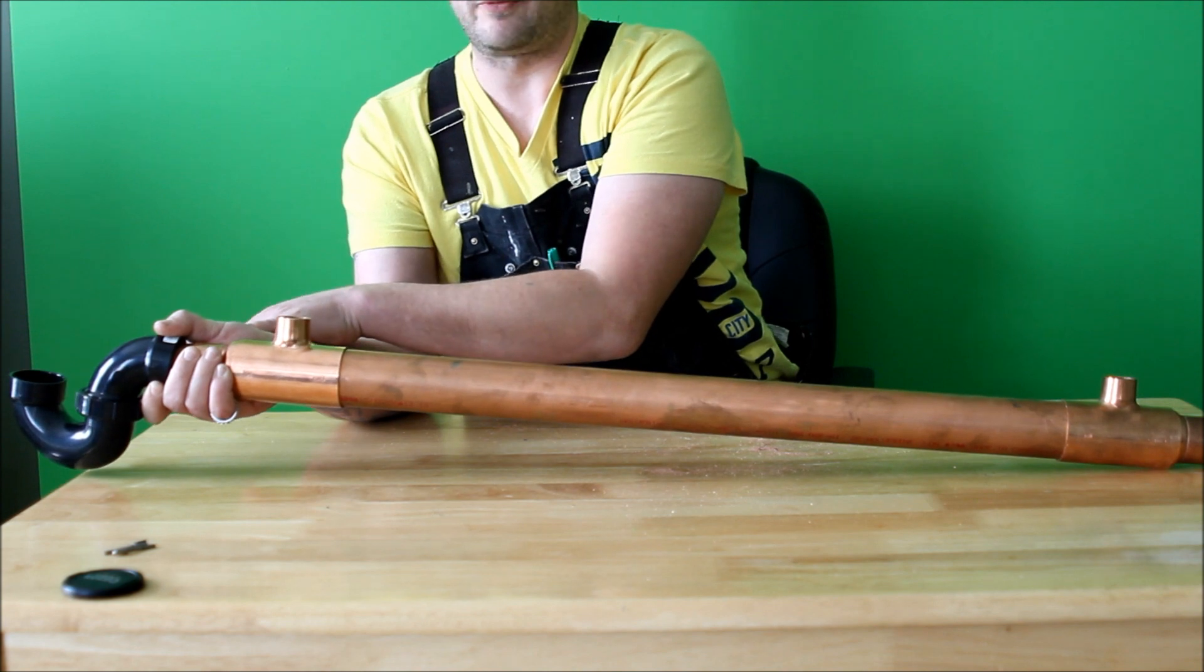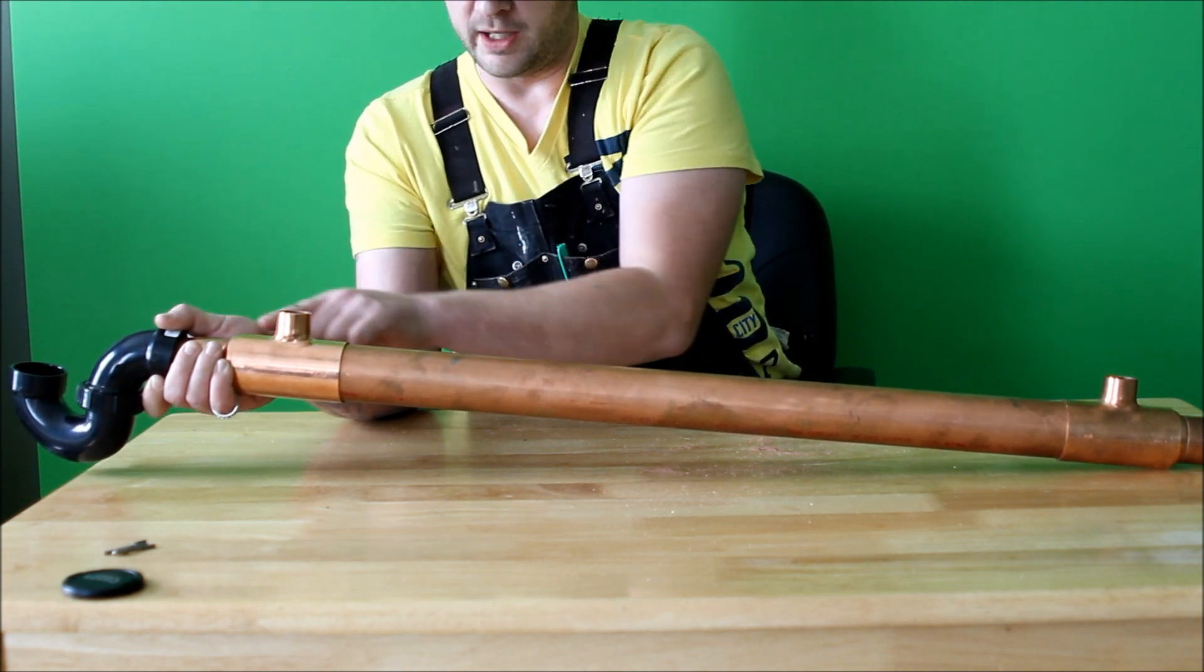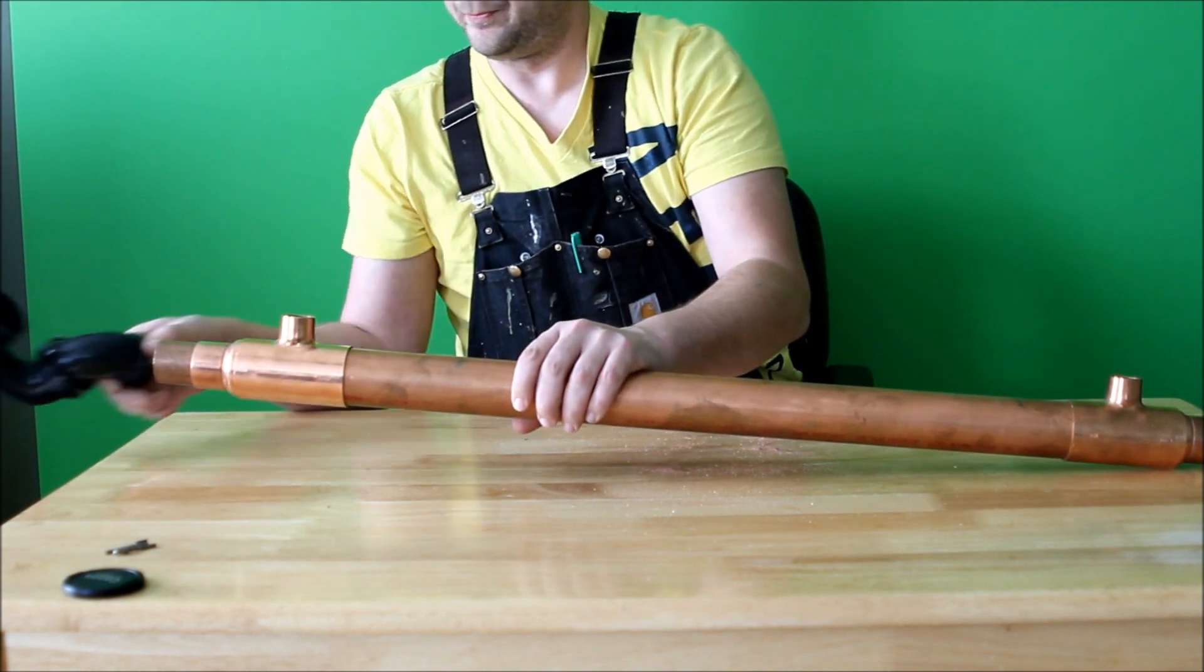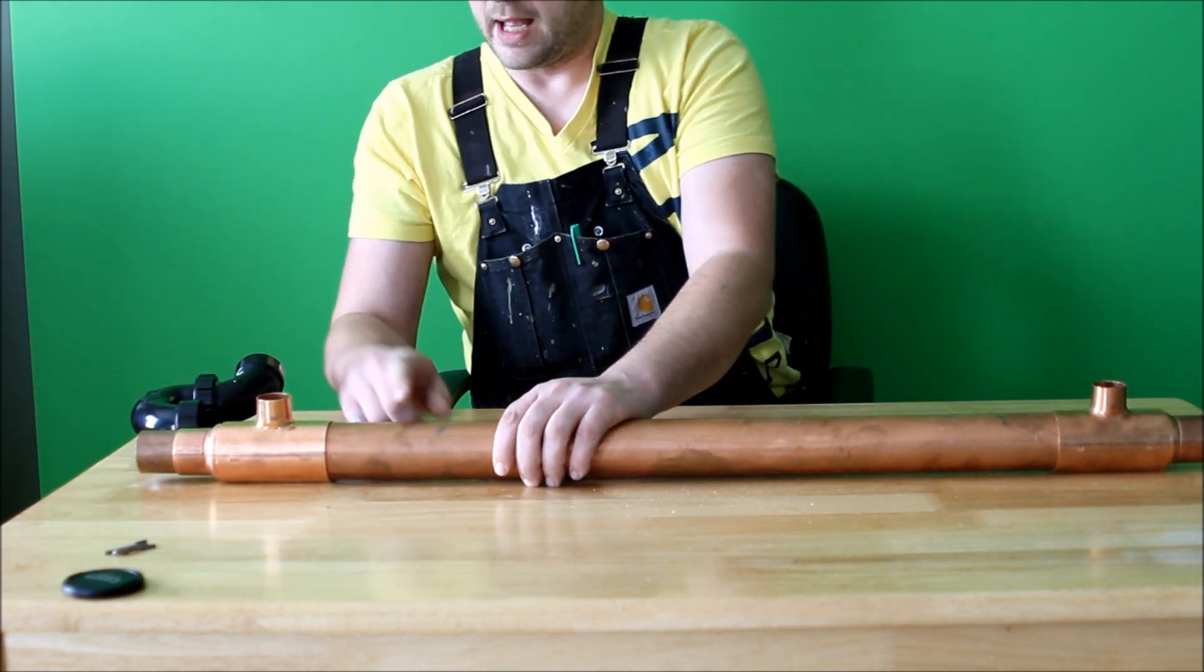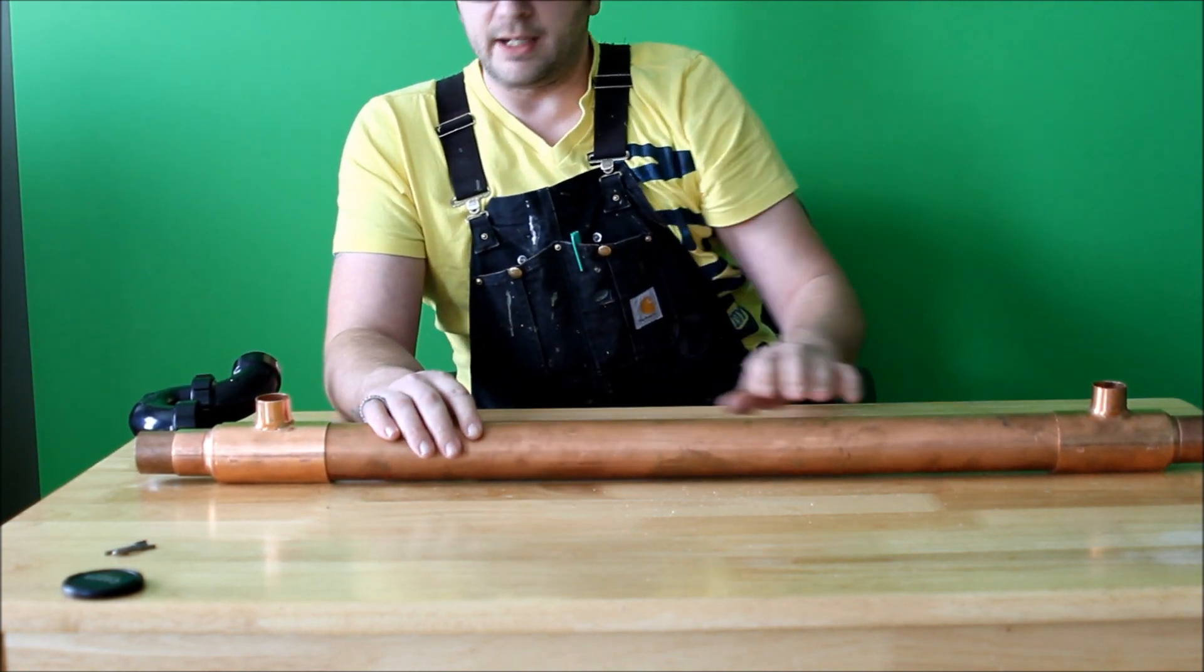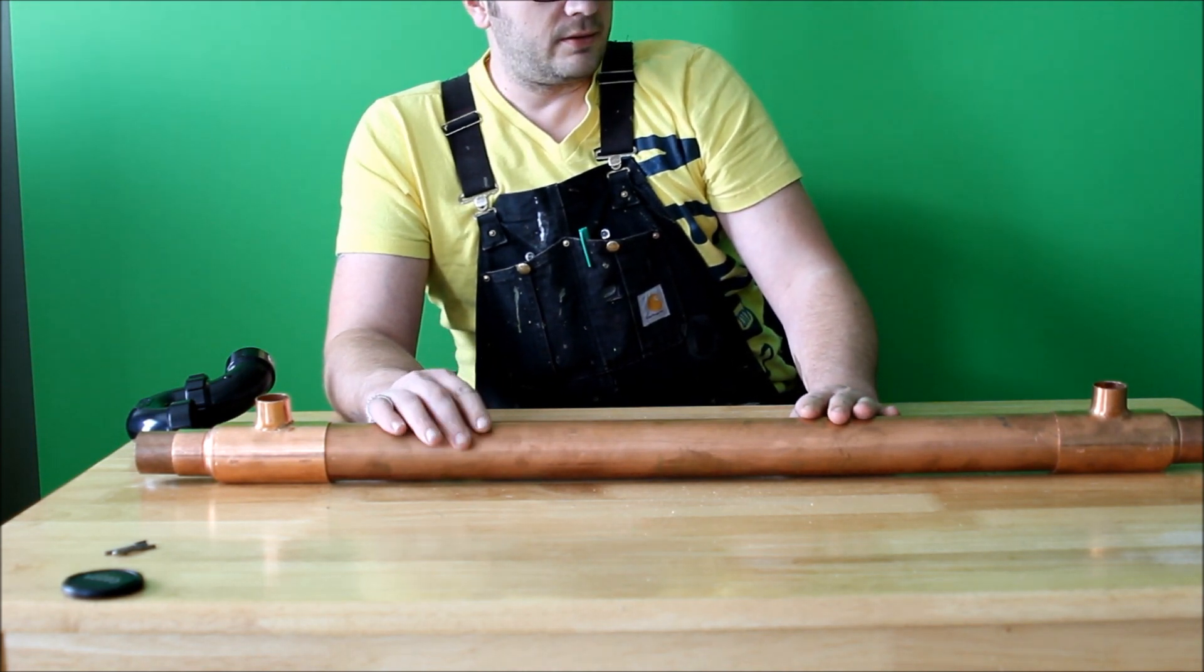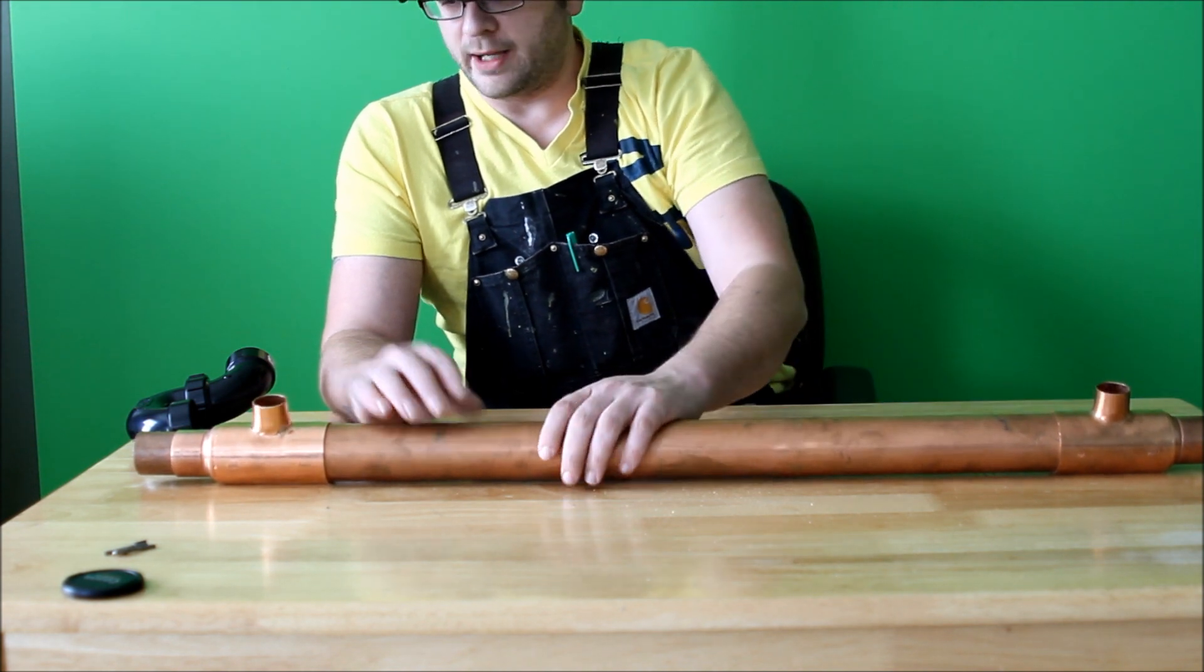This would be your P-trap for your shower. The waste would flow through the inner inch and a half copper, and your domestic cold water feeding your hot water tank would flow through the exchanger around the inch and a half waste pipe, heating up the cold water feeding your tank.